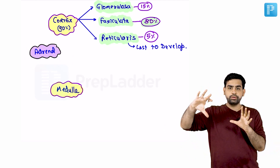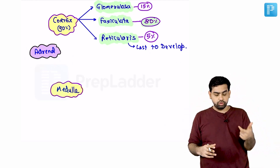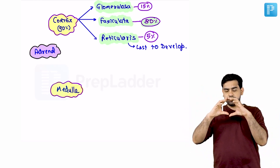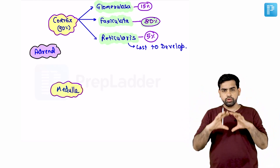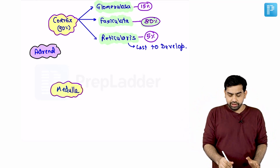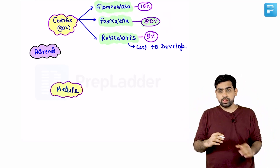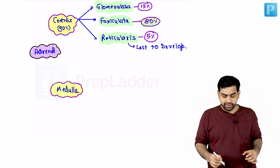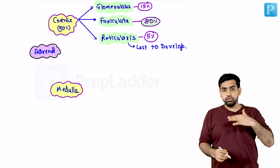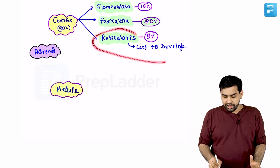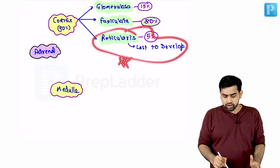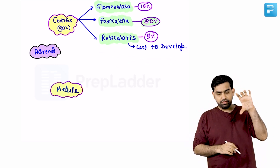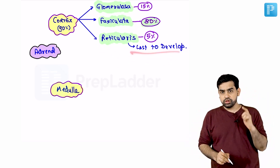The adrenal cortex can be subdivided into three zones: glomerulosa, fasciculata, and reticularis. Out of these three zones, the fasciculata is the one having the maximum size — around 80 percent of the entire adrenal gland is made up of the fasciculata. However, if we ask which zone is last to develop, it is the reticularis. So fasciculata has the largest size, but reticularis is the last to develop.